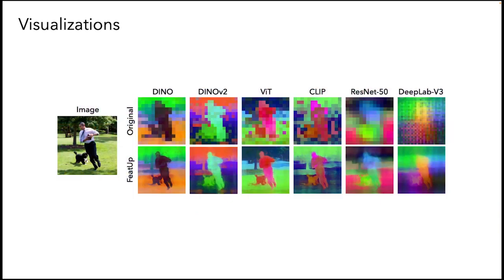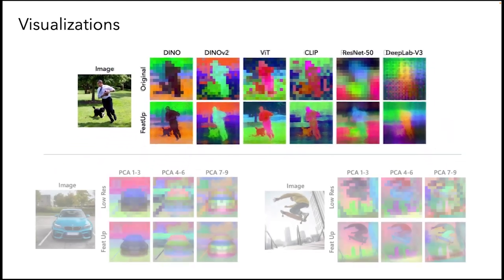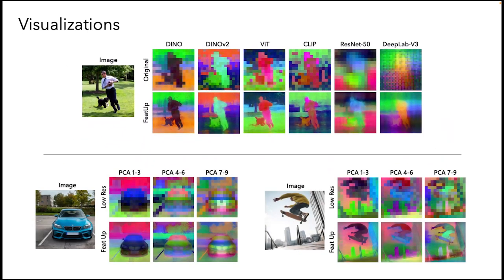We also observe boosts in quality for feature maps across a wide variety of backbones, and in the PCA breakdown, we see that FEEDUP maintains feature resolution as objects are subdivided into more fine-grained parts.